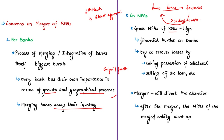Banks try to recover losses by taking possession of a borrower's collateral or selling off the loan at a significant discount. However, if a merger happens, it will totally divert the attention of banks from loan recovery, as the newly merged bank will not know the background of borrowers and defaulters. Also, the volume of borrowed accounts in a merged branch will rise — this was seen with SBI when six associate banks merged with it, and the NPAs of the merged entity went up.